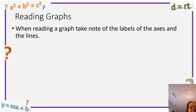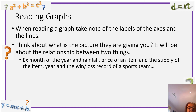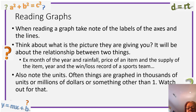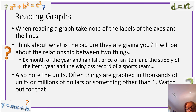Reading graphs. When reading a graph, take note of the labels of the axes and the lines — this tells you a lot about what it's all about. Think about what relationship the picture is showing, for example month of the year versus rainfall, price of an item versus supply, or year versus a sports team's win-loss record. Also note the units — things are often graphed in thousands or millions, so your answer might be four on the graph but actually represent four million, 400,000, or 4,000. Pay attention to what the units are actually representing.